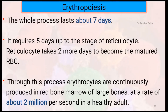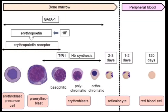Through this process, erythrocytes are continuously produced in the red bone marrow of large bones at a rate of about 2 million per second in a healthy adult. Here we show the different stages of erythropoiesis in bone marrow and in blood. Thank you for your patience in listening.